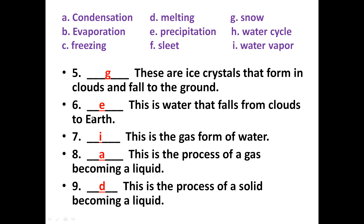Number six: this is water that falls from clouds to earth. This is precipitation — water in the state of liquid. Precipitation can be liquid water, solid snow, hail, or sleet. The process of water coming back to the earth is called precipitation. The answer number six is E — precipitation.